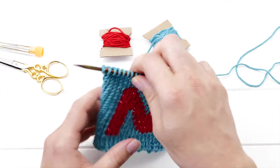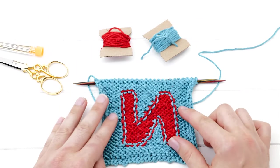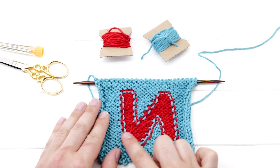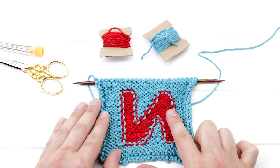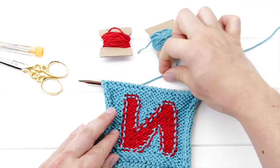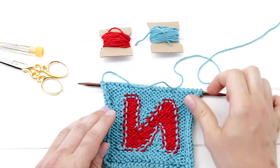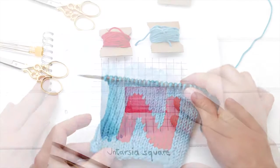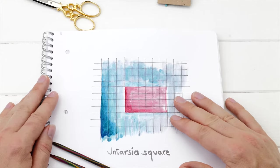Unlike in fair isle, you're not carrying two or more yarns at the same time and you're not creating any floats on the back side. You only ever knit with one yarn at a time. Let's show you an example. I'll start super easy and just knit a little square to show you the techniques.